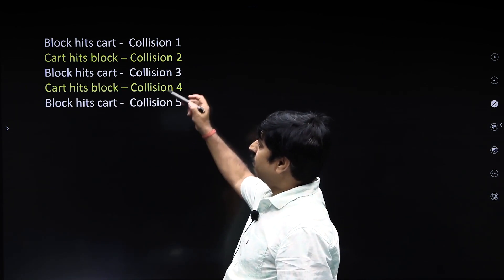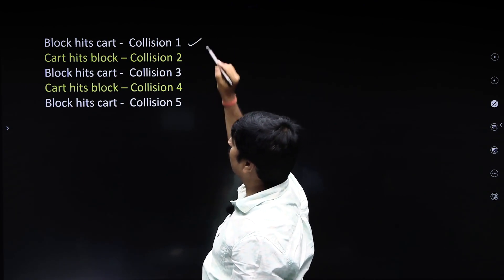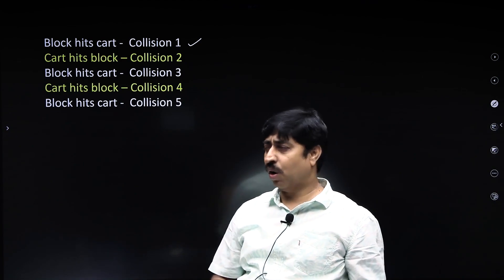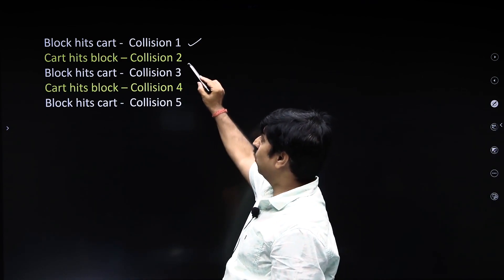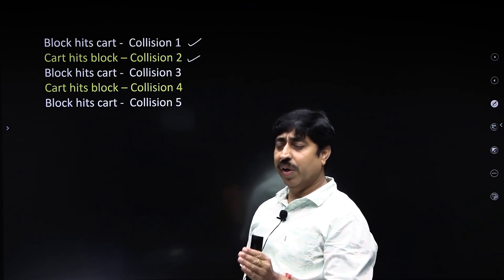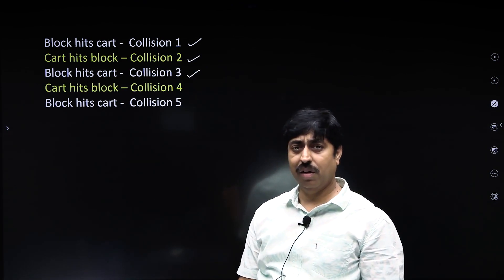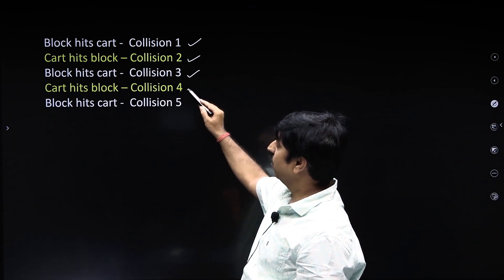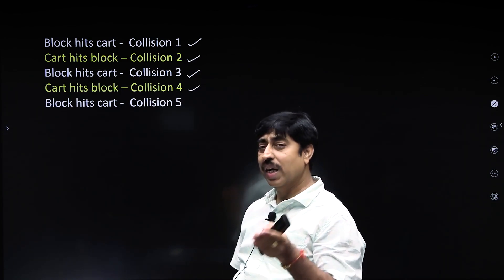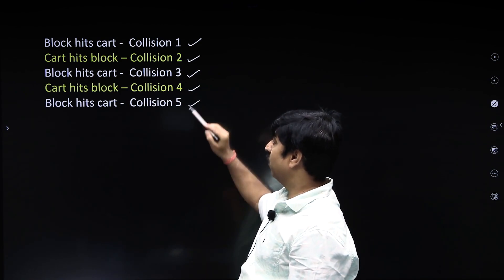Where is the first collision? When the block hits the cart — this is collision number 1. Cart begins to move, hits the block — this is collision number 2. Now the block is moving, hits the cart — this is collision number 3. Cart is moving, hits the block — collision number 4. And the block hits the cart again — this is collision number 5.